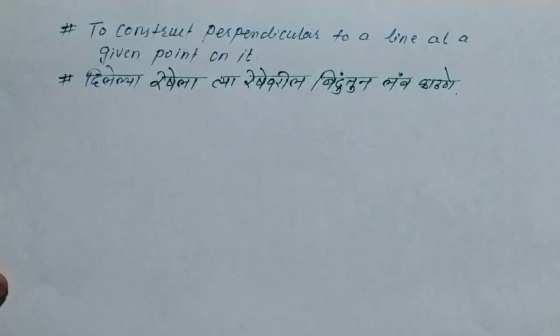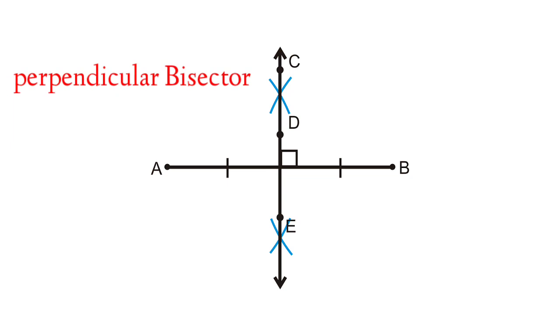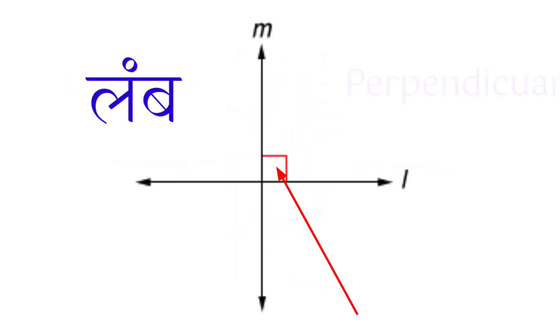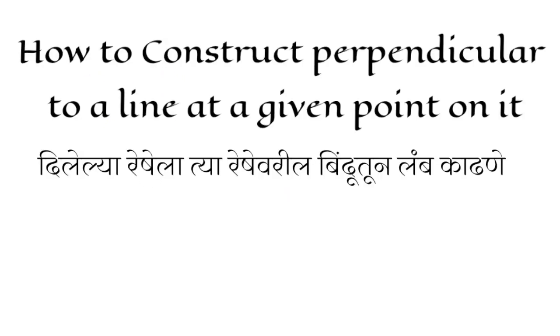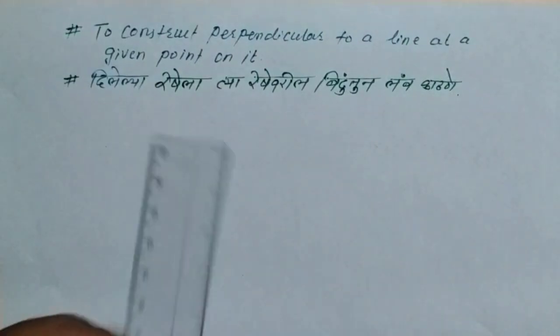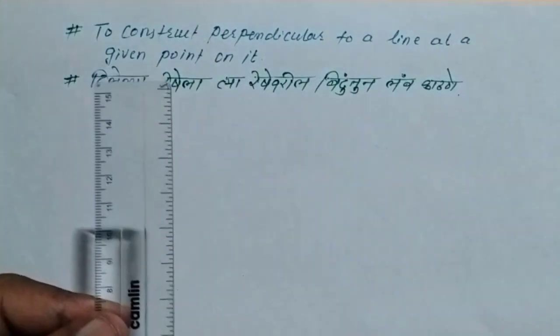In the previous video we learned to construct a perpendicular bisector — we divided a line into two equal parts. Here we are not going to divide the line into two equal parts. We are going to draw a perpendicular at a given point on the line, forming a 90-degree angle.